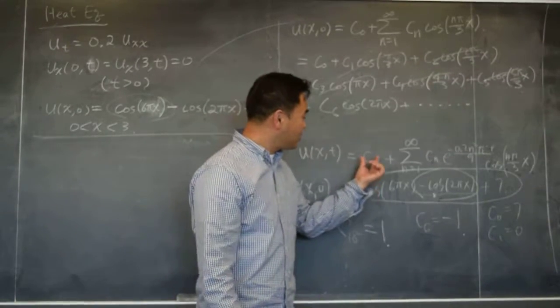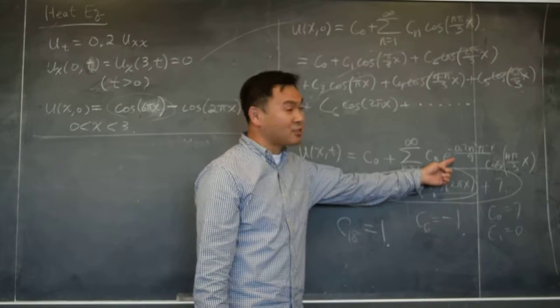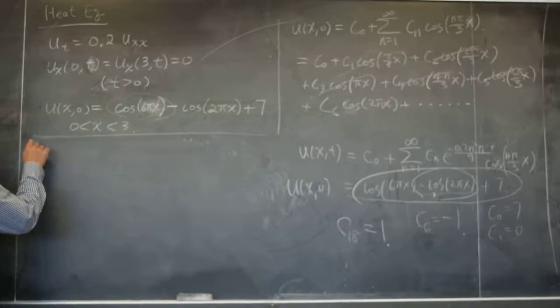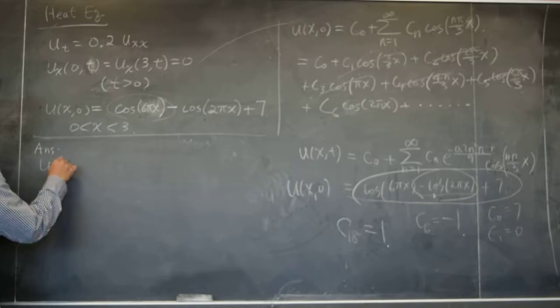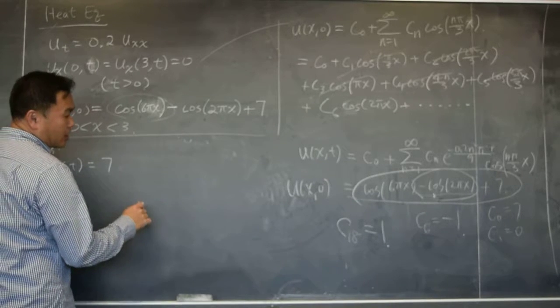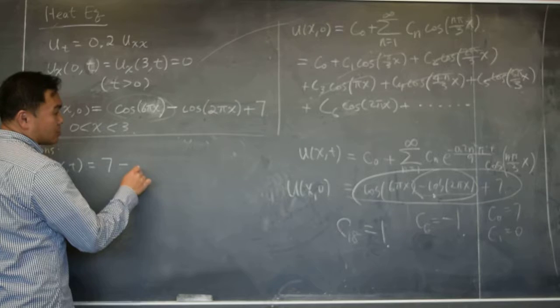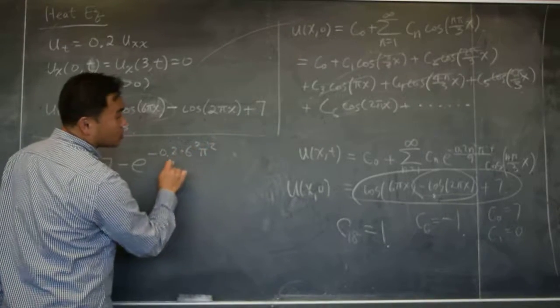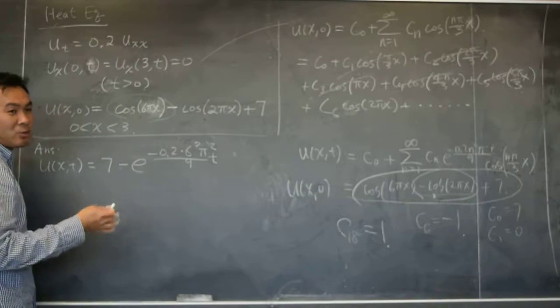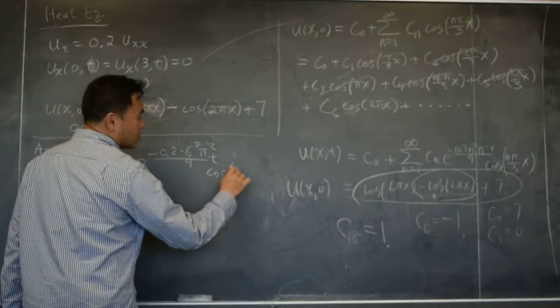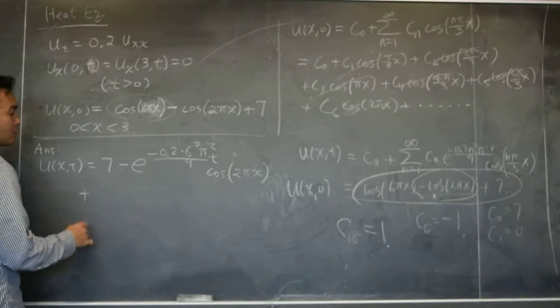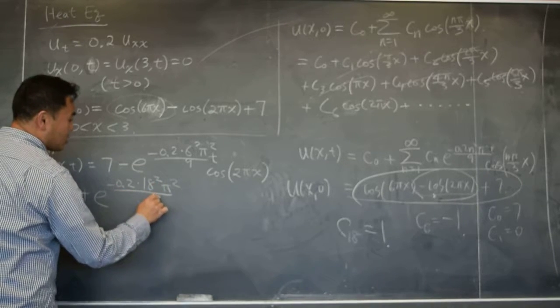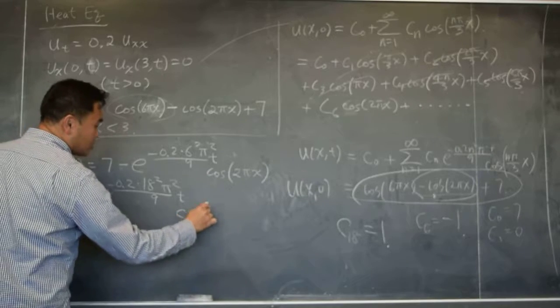So that actually gives us the following answer. So we know that everything is 0 except C_0, C_6, and C_18, so we just have to write this summation as a finite sum. Answer is u(x,t) is 7, and then C_6, that's minus 1. C_6 has e^(-0.2·6²π²t/9). And of course you can simplify this, but I don't want to bother. Times cosine(2πx). And then plus e^(-0.2·18²π²t/9) cosine(6πx).